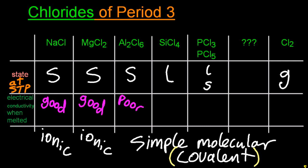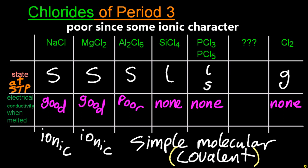Putting in the conductivity, the covalent ones are all going to be very low conductivity. Al2Cl6, that's poor, but if you said none, I'm sure they'd let you off with that as well.